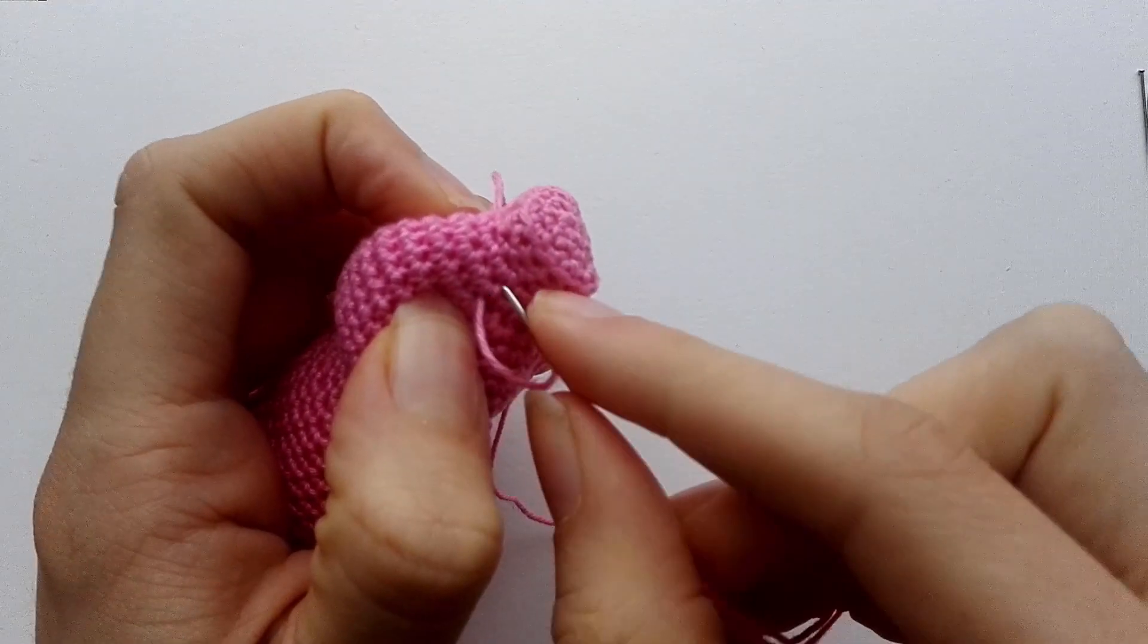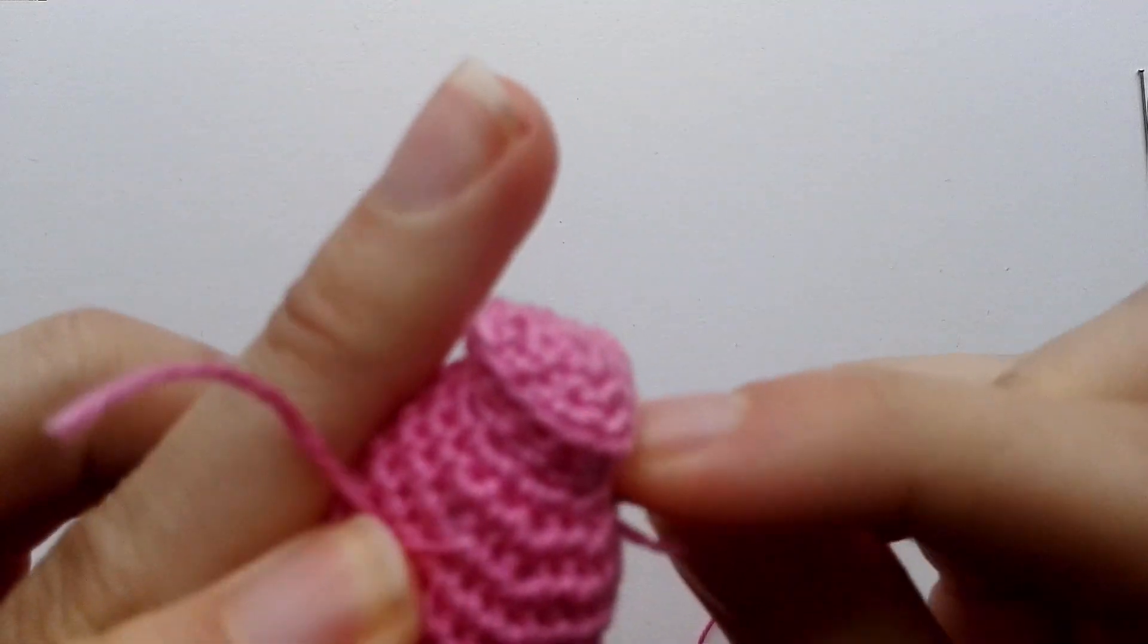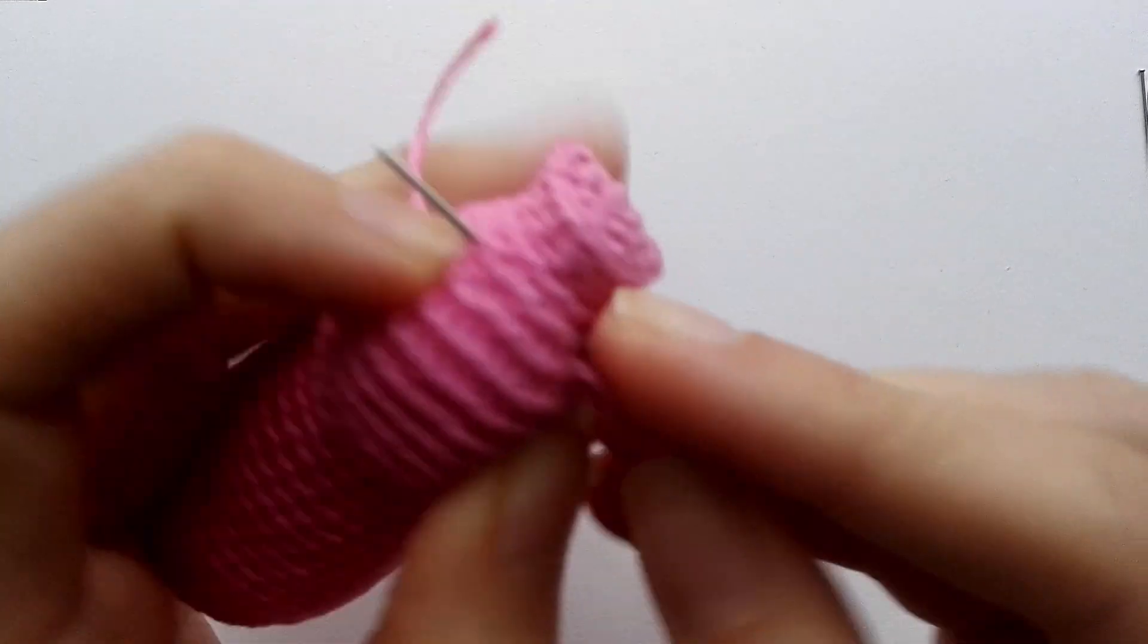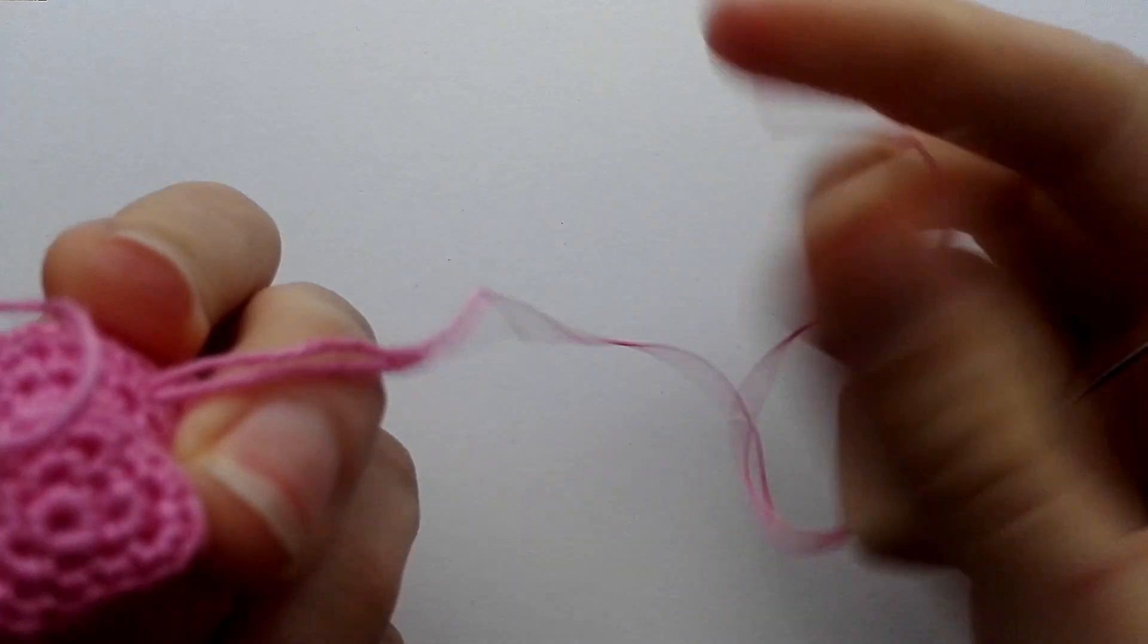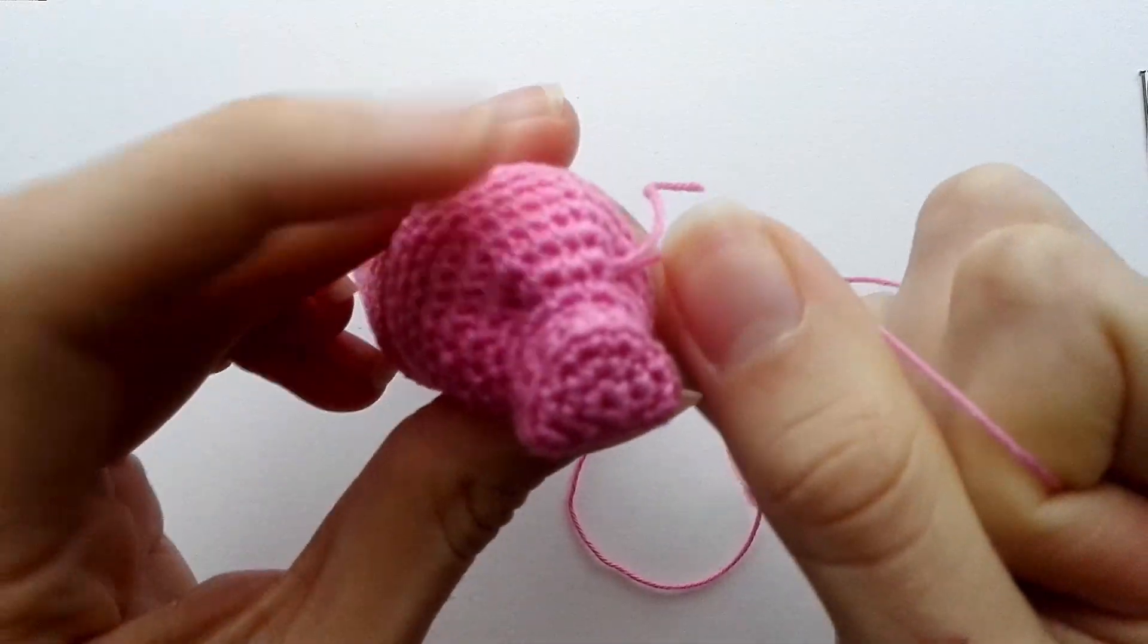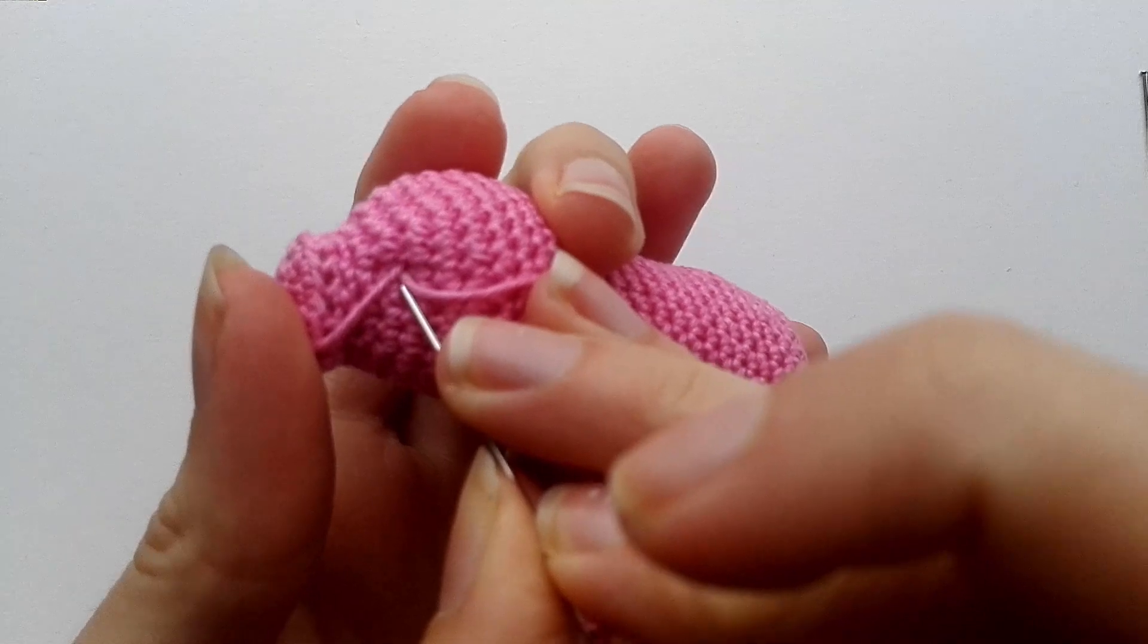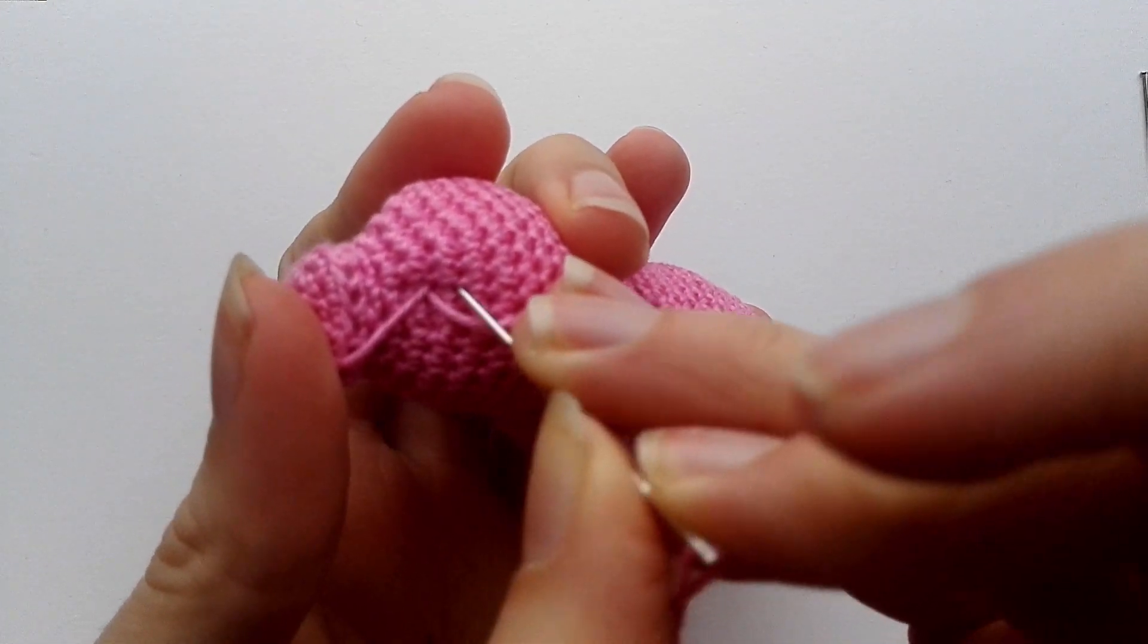So then I go in another stitch and go out where the other indent is around the same place. And then just kind of look, does this look okay? Personally I want my indent to be a bit bigger. So I'm going to go one row further with my indent.